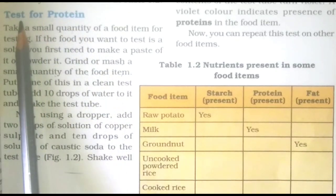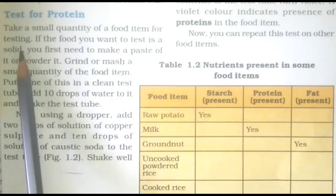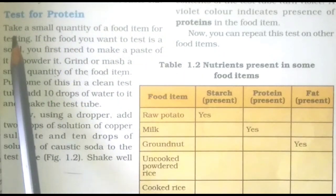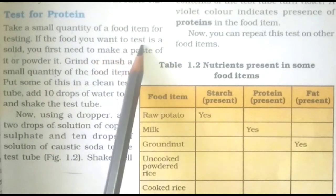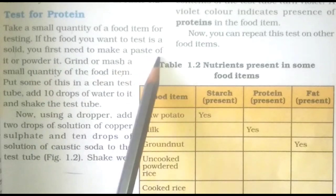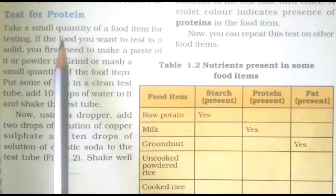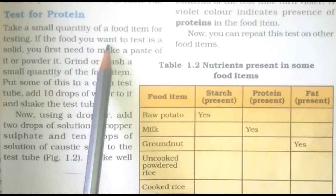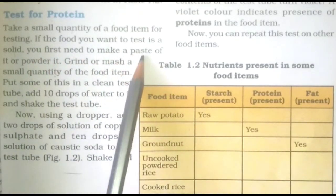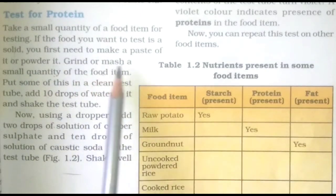Protein के लिए Test: Take a small quantity of a food item for testing. If the food you want to test is a solid, you first need to make a paste of it or powder it. अगर आप किसी food को test करना चाहते हैं और वो solid है, तो आपको पहले उसका paste या powder बनाने की जरुरत होगी।